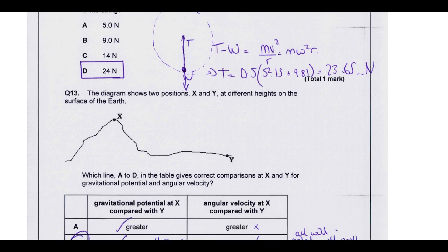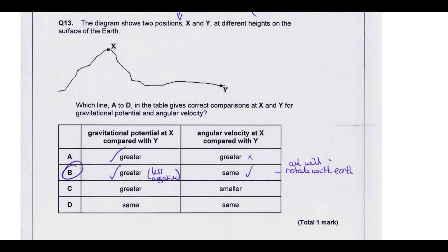We've got two positions, x and y, different heights on the surface of the Earth. Which of them gives correct comparisons of the potential and angular velocity? So if there are points on the Earth, they're all rotating. But a day is the same everywhere on the Earth. So the angular speed is going to be the same. So it's therefore going to be either b or d. But x is further away from the centre of the Earth. So the potential will be less negative. So it's got bigger. So that's going to be option b there. Because potential is always negative. If you move away from the Earth, it becomes less negative. So it increases.